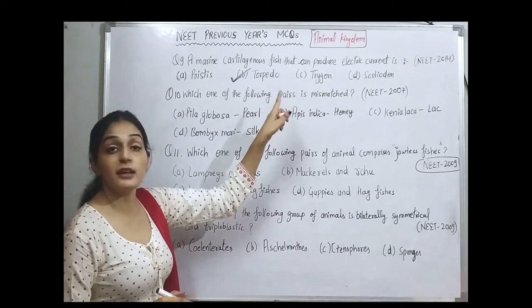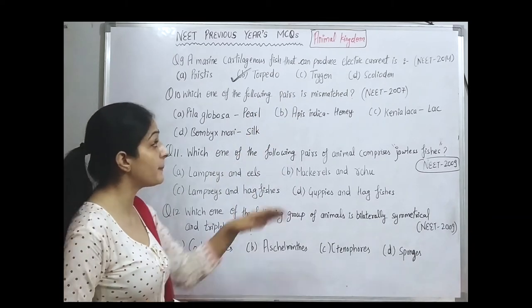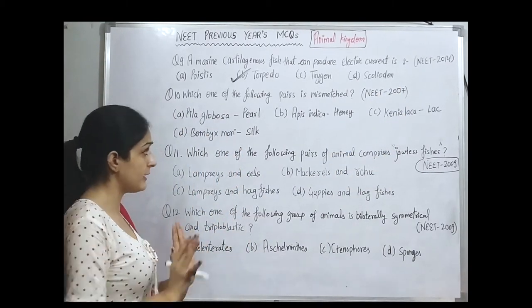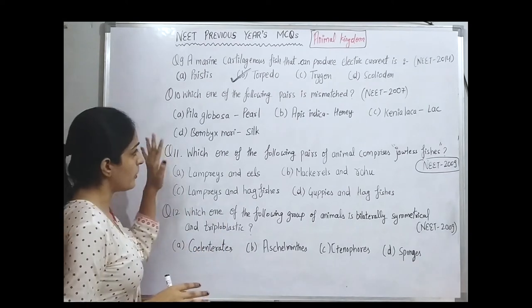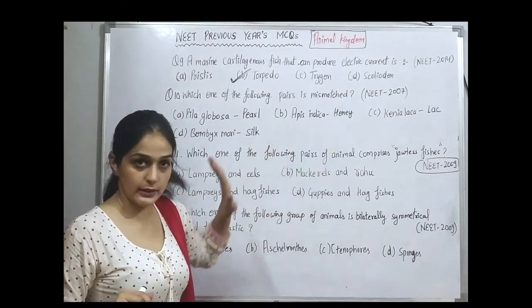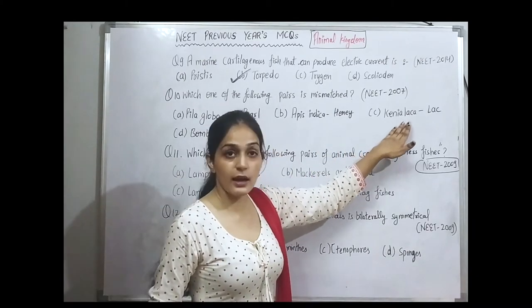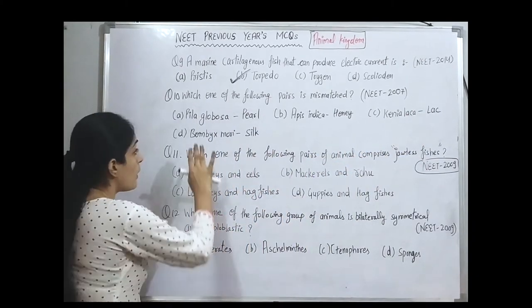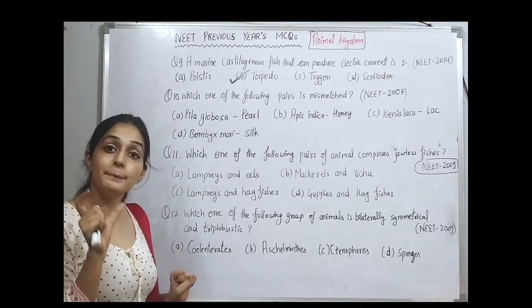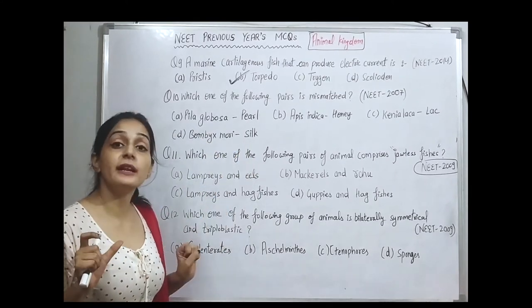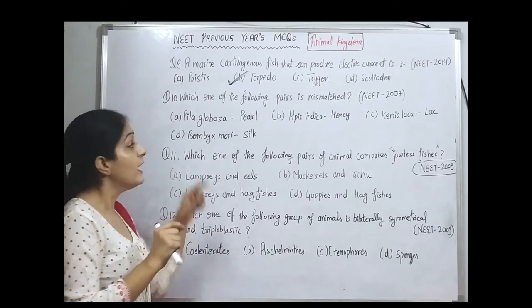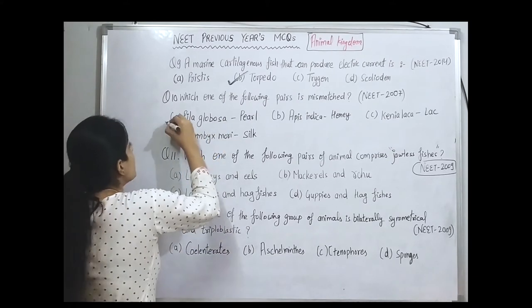Question from 2007: which of the following pairs is mismatched? Looking at the matched pairs: Apis is honey bee, Lakh is Kerria (lac insect), Bombyx mori is silkworm for silk. Pila globosa is the apple snail — it does not produce pearl. Pearl is produced by the pearl oyster. So Pila globosa paired with pearl is the mismatched option. Option A is correct.